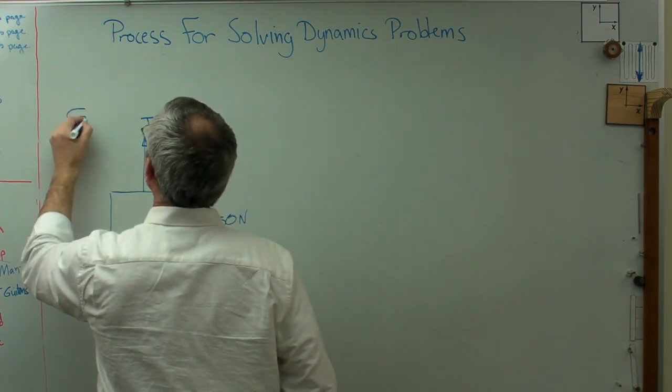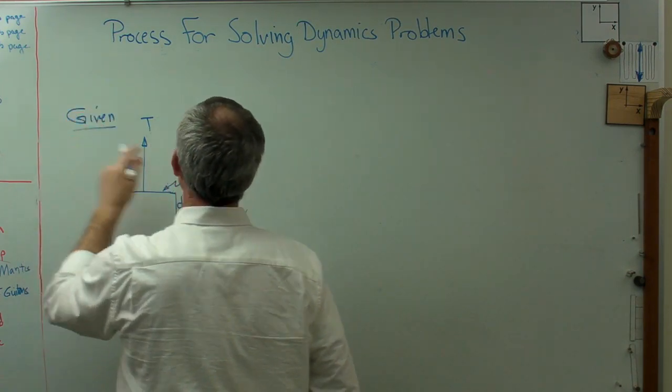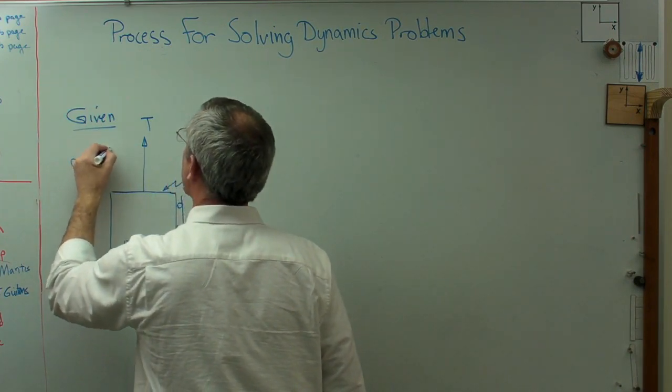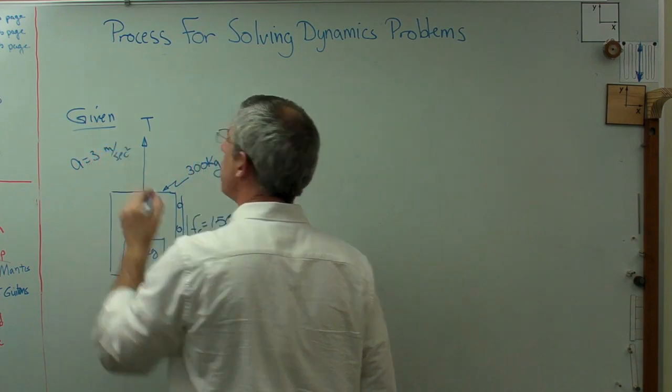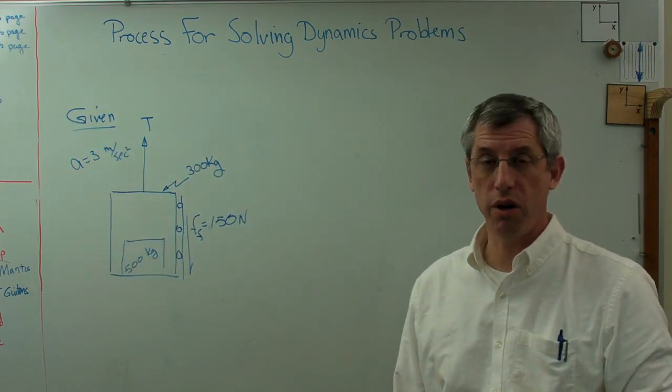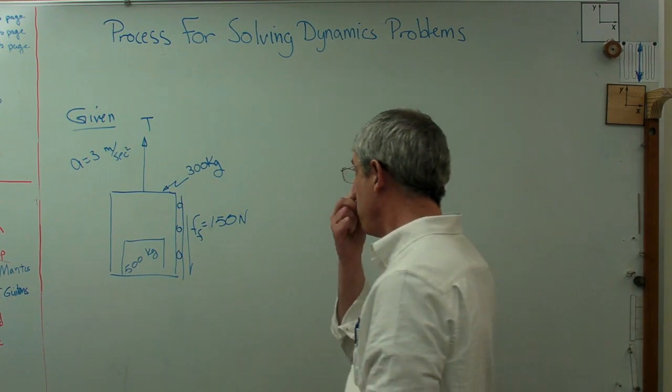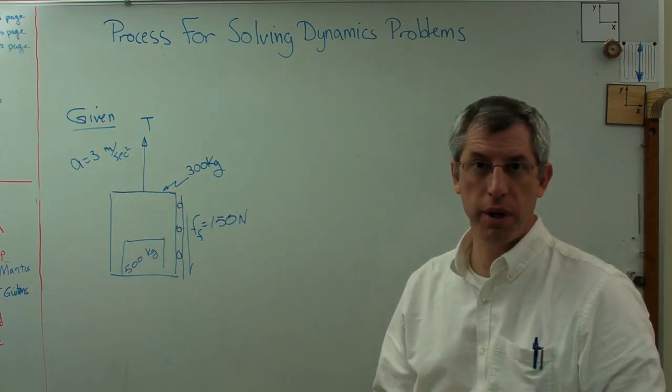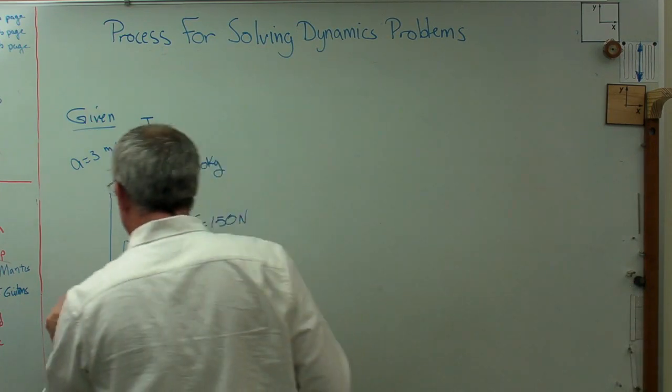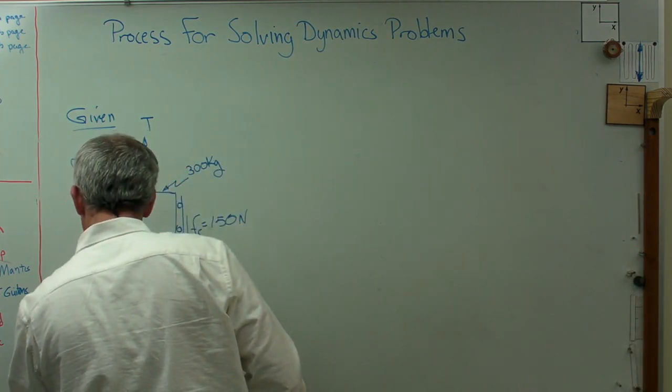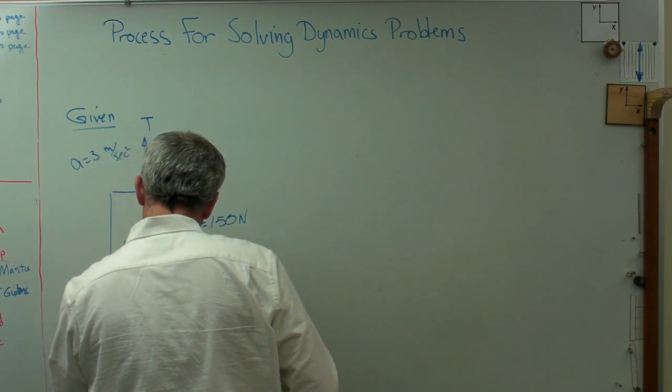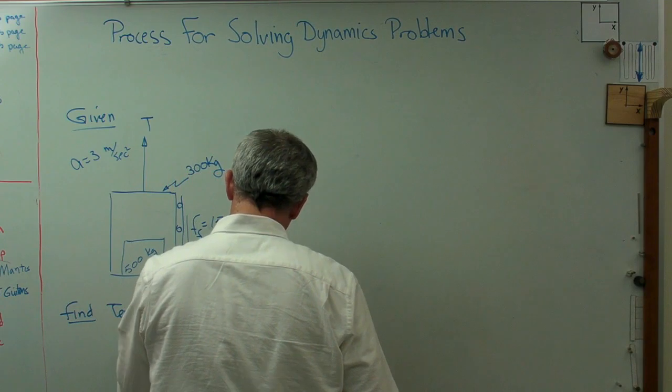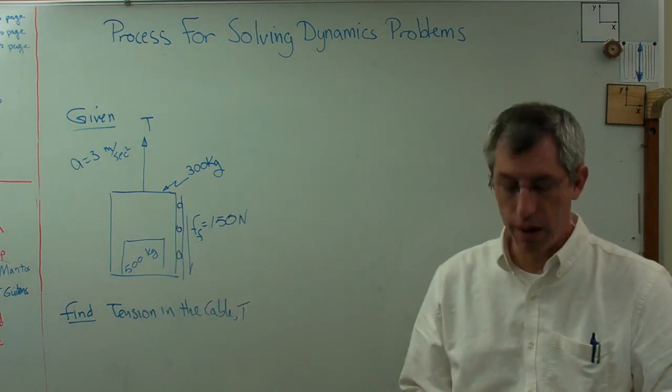So we're given all this stuff here. We know acceleration. The desired acceleration is 3 meters per second squared, about a third of a g. Enough to get moving, but not so much that you're pinned to the floor. So we know the acceleration, we know the masses, and we know that we've got this little bit of additional friction. Let's find tension in the cable, T.